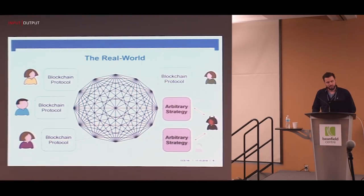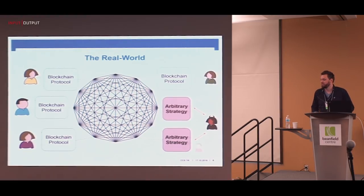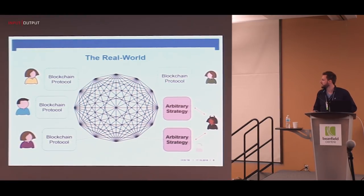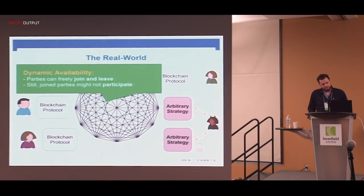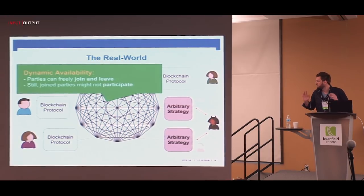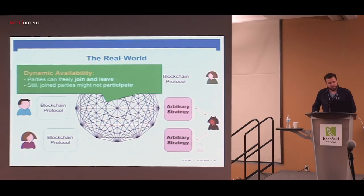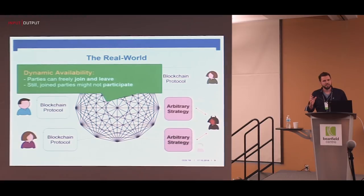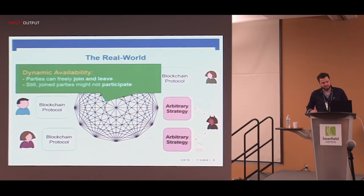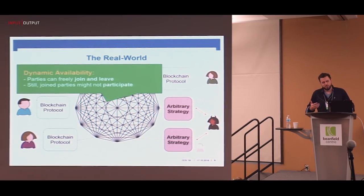The real world looks more or less like a multi-party computation: people connect over a network with an adversary that always tries to tamper with what the honest parties want to do. In blockchain settings, dynamic availability refers to the fact that people can just decide to join or leave as they want. To be fully dynamic we also have to consider the fact that even if somebody connects to the network, they might temporarily be stalled, offline, or sleepy — temporarily unavailable.